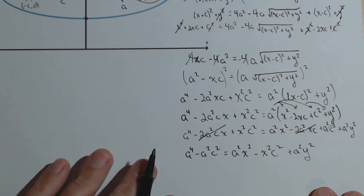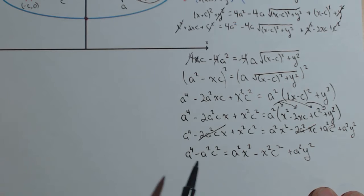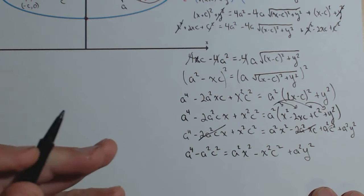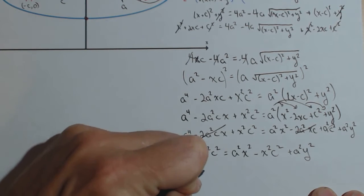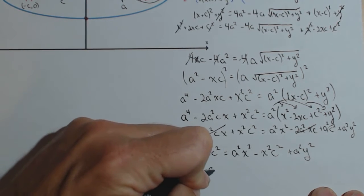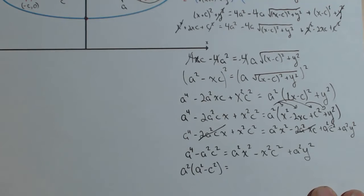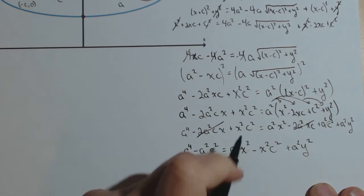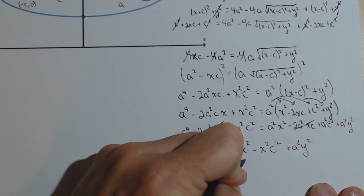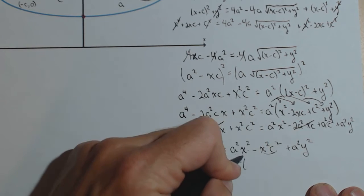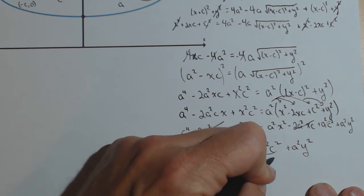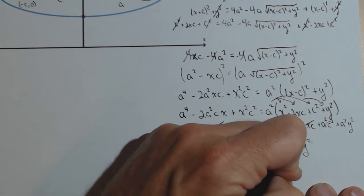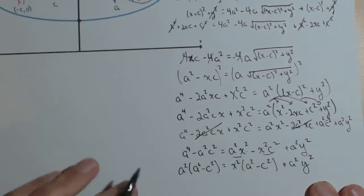Now, I need to do a little factoring. This isn't really obvious if you've never done it before. I'm going to factor in a squared out of this term. So a squared times a squared minus c squared equals. And over here, I'm going to factor out the x squared, x squared from these two terms times a squared minus c squared plus a squared y squared.